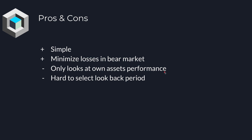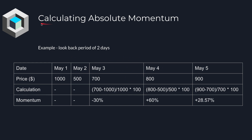Some of the cons: it only looks at its own asset's performance, and it's hard to select a lookback period that is optimal. So let's talk about how to calculate absolute momentum.